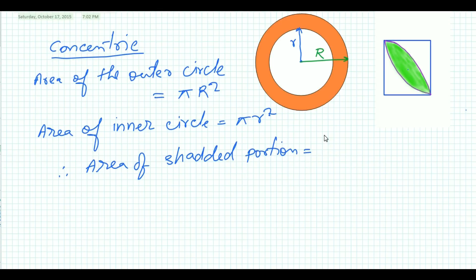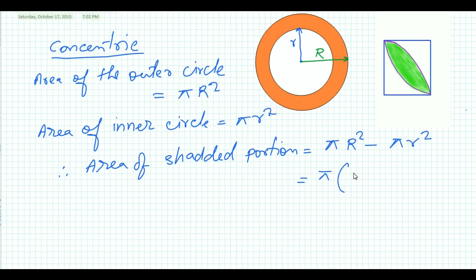The area of the center portion equals the area of the outer circle minus the area of the inner circle, that means πR² minus πr². Taking π as common, we get π(R² − r²). This is the area of the region bounded by the two circles — that means this center portion.